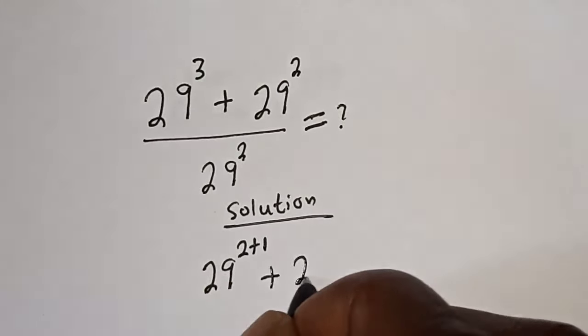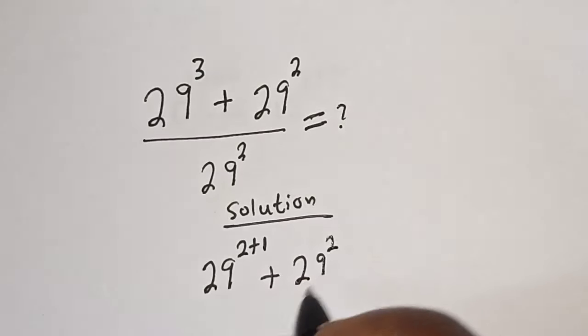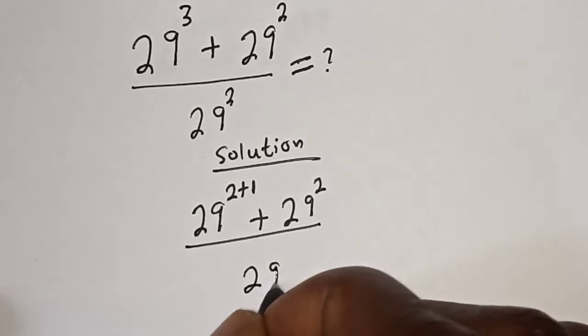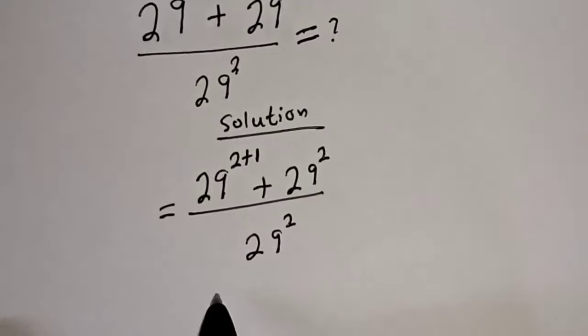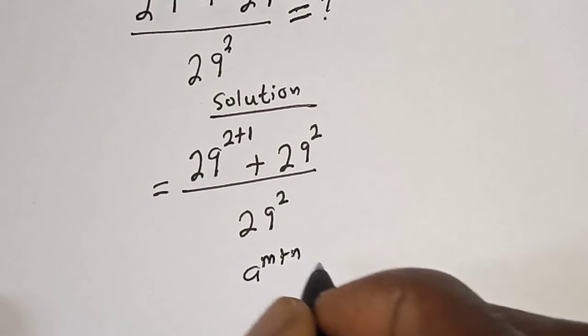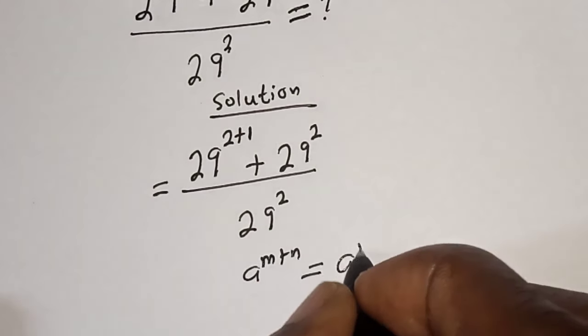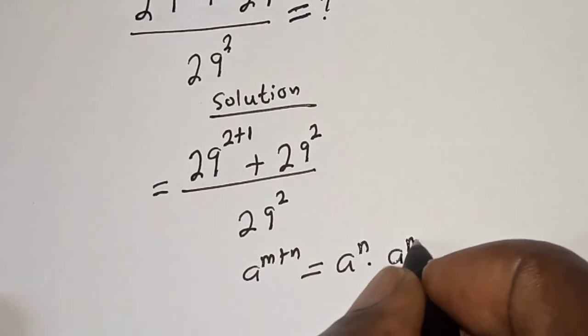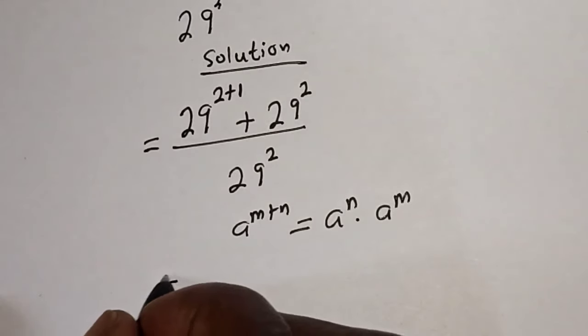plus 29 squared, over 29 squared. Take note of this rule: a raised to power m plus n is equal to a raised to power n multiplied by a raised to power m. So this is equal to